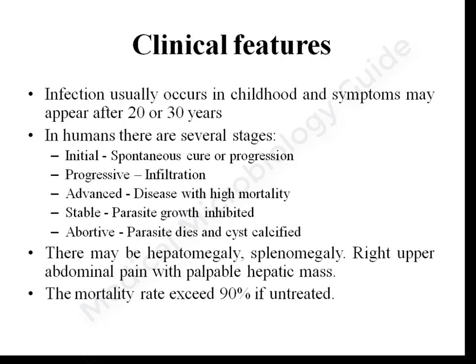Regarding clinical features, infection usually occurs in childhood, but for the disease to manifest it takes around 20 to 30 years. Human disease can be divided into several stages. In the initial stage, the disease may spontaneously cure or progress to the progressive stage, where the cyst infiltrates neighboring tissue or metastasizes — leading to an advanced stage with high mortality. Alternatively, it may enter a stable stage where parasite growth is inhibited, or an abortive stage where the parasite dies and the cyst gets calcified.